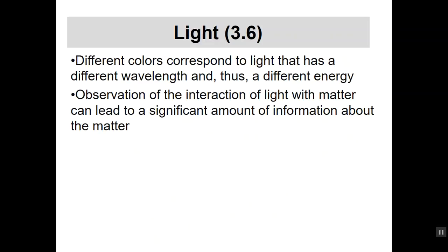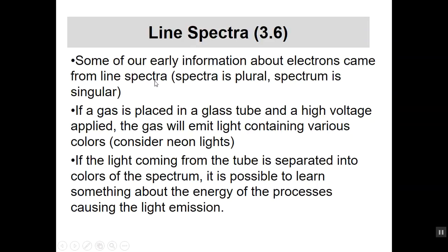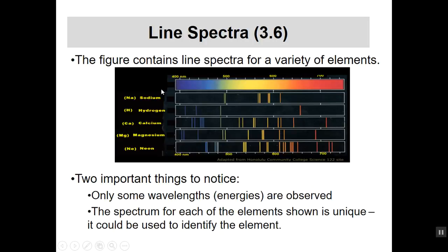A lot of our early information came from something called line spectra. Note the linguistics: spectra is plural, spectrum is singular. If you take a glass tube, put a gas in it — like a neon light — and put a high voltage across it, the gas emits light containing various colors entirely dependent on what gas is inside the tube. If you then take that light and separate the colors, you get a spectrum.